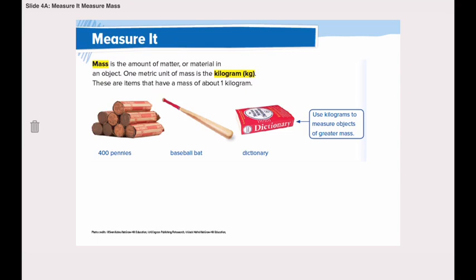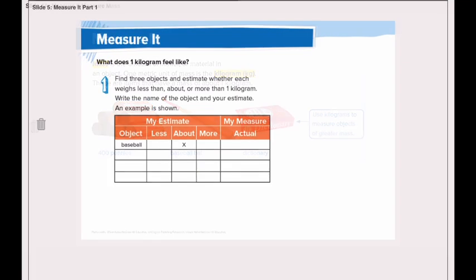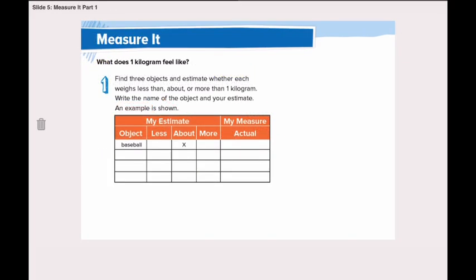A quick hint: when we're measuring liquid, we measure the capacity of the liquid. When we measure objects, we calculate the mass of the object. That's the difference between capacity and mass. Remember, it's a hands-on lesson!